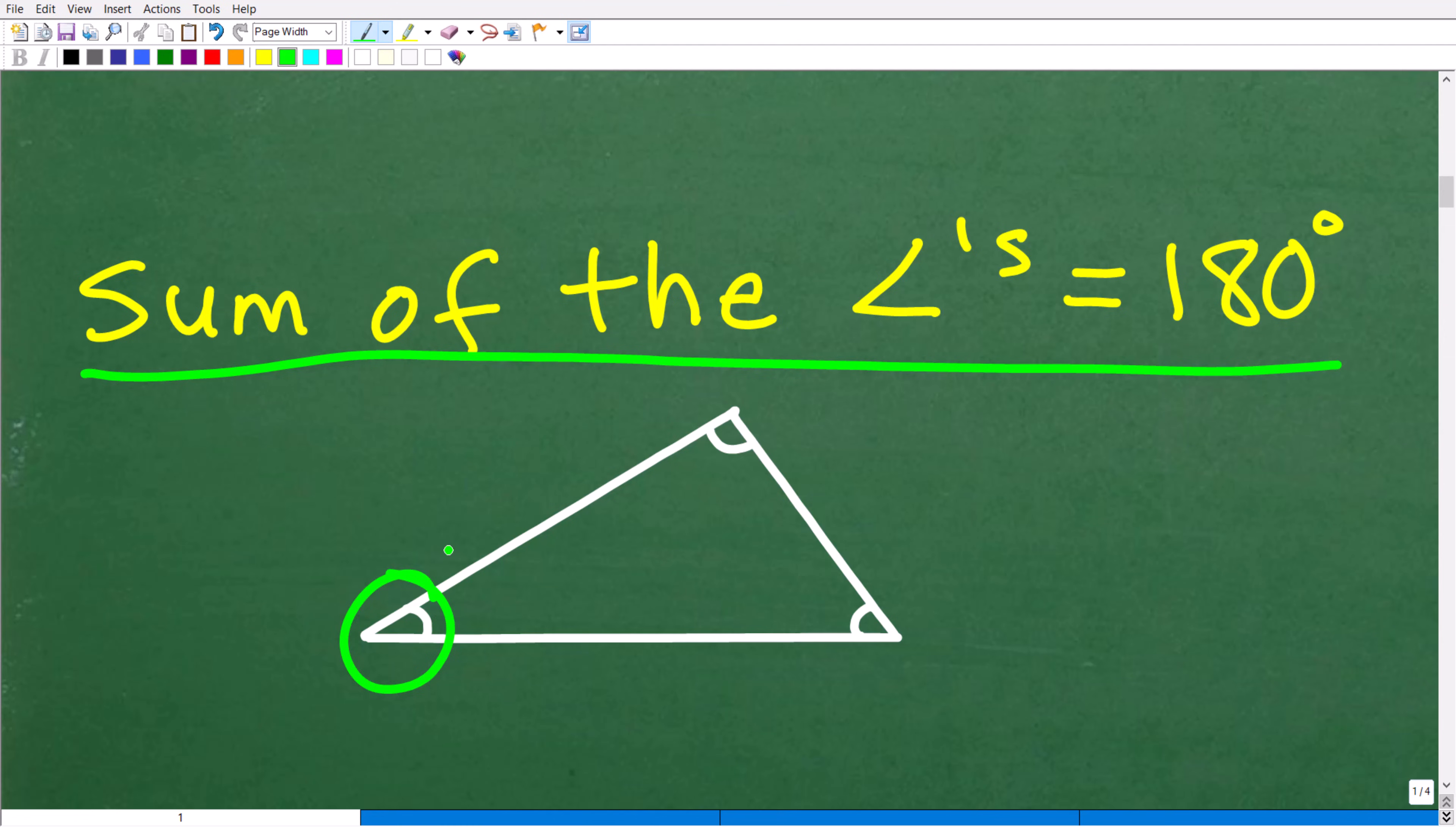So what does that mean? Well, if I take this angle, and it doesn't make a difference what triangle we're talking about, you take this angle plus this angle plus this angle, you'll always get 180 degrees.